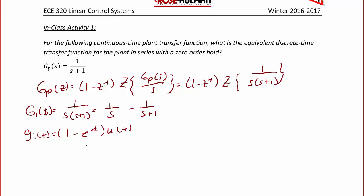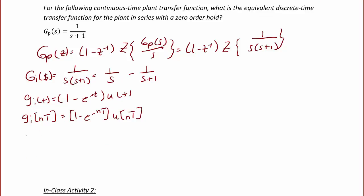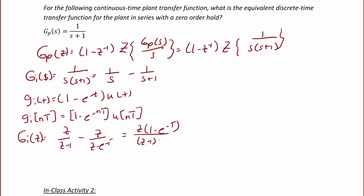We can write that in discrete time as GI(nT), where we're sampling that continuous time system, so it becomes (1 − e^(−nT)) · u(nT). Now we find the Z-transform of this time domain function — or we could have found the Z-transform directly from the S-domain. So GI(z) = z/(z−1) − z/(z − e^(−T)), which equals z(1 − e^(−T)) / [(z−1)(z − e^(−T))] when we collect like terms with a common denominator.